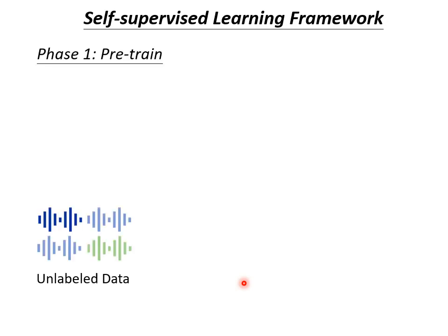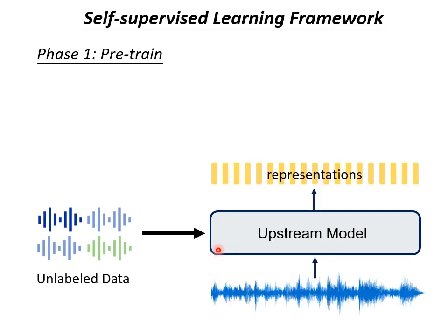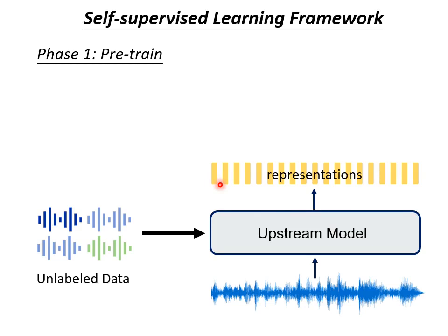Before we get started, I will briefly review the self-supervised learning framework, using voice data as our example. Nowadays, when we are dealing with machine learning problems, we often separate it into two stages. The first stage is pre-training. In pre-training, we have a lot of unlabeled data. Using voice data as an example, you can imagine that we crawled a bunch of voice data from the Internet, like downloading from YouTube. For those YouTube voice data that don't have any subtitle as a label, what can we do to make use of them? We will use those unlabeled data to train an upstream model.